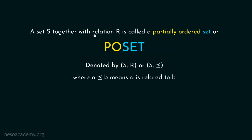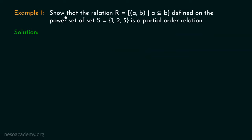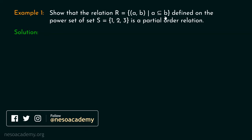Let's discuss one example. Show that the relation R, which is the set of all ordered pairs (A, B) such that A is a subset of B, defined on the power set of set S = {1, 2, 3}, is a partial order relation. We have to show that this relation R defined on the power set of set S is a partial order relation.